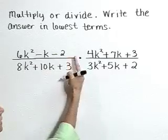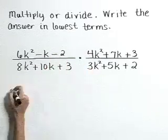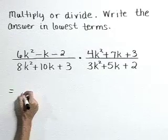Now before we jump into any multiplication here, let's factor each of these pieces and see if we have any common factors that we can cancel out.